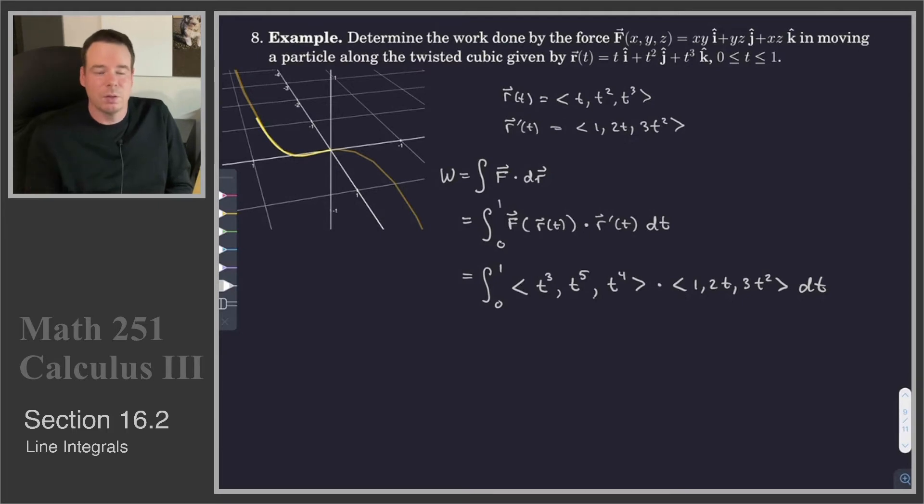We've set up the integral. We've used our parametrization to rewrite everything in terms of t, and now we're just staring at a Calculus 2 integral. There's still a dot product left to compute, but once we do this dot product we get a polynomial. It'll be integral from 0 to 1 of t cubed + 2t to the sixth + 3t to the sixth dt. That works out to 1/4 + 2/7 + 3/7, or 1/4 + 5/7 equals 27/28. That is the value of the work involved in having this force field move a particle along this cubic curve.